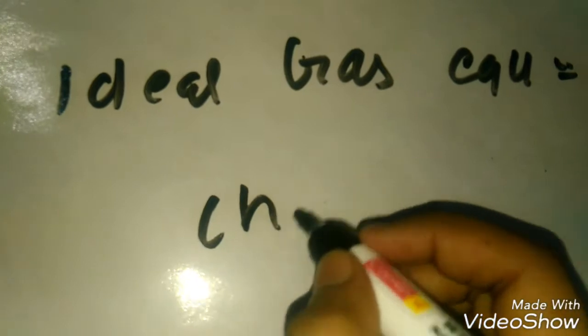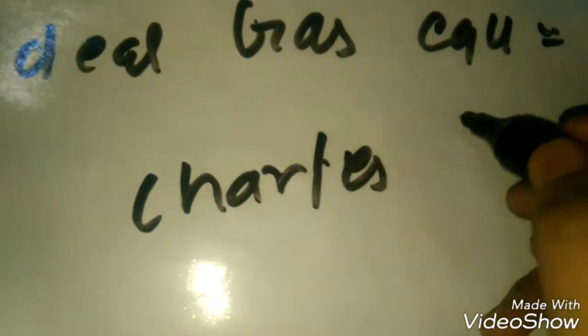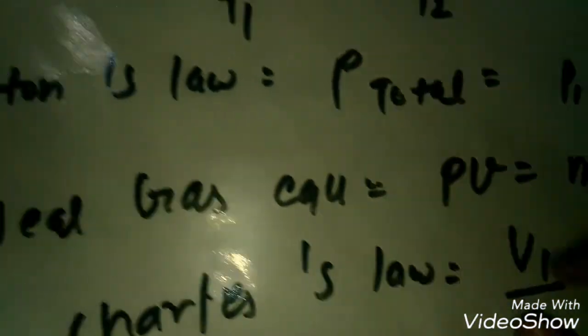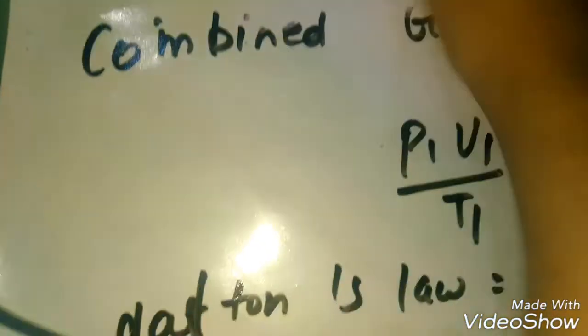Next, Charles's law. What is Charles's law? V1 upon T1 is equals to V2 upon T2. This is just the revision of this formula.